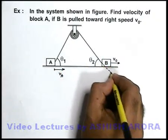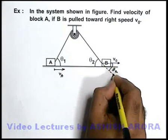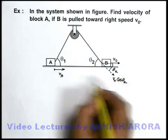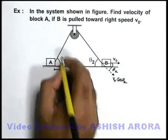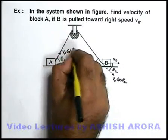Along the length of the string, the component of this velocity, as this is at angle θ₂, can be given as v₀ cos θ₂. And if A is moving toward right with vₐ, along the length of the string this velocity component will be vₐ cos θ₁.